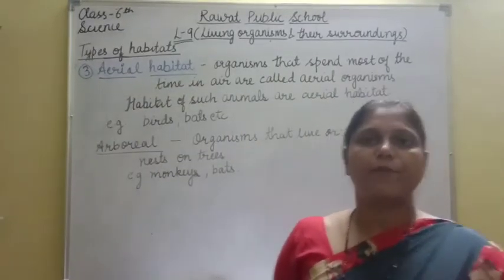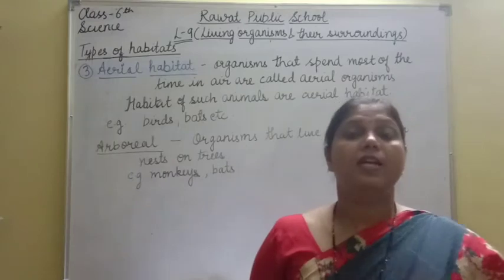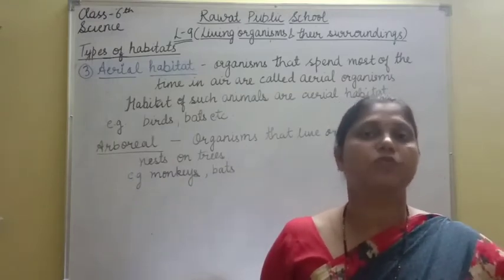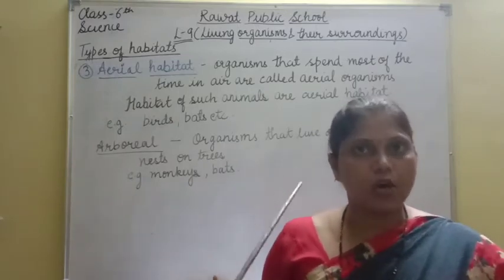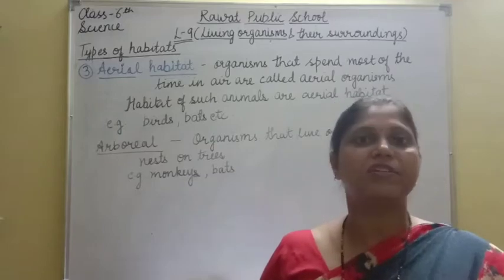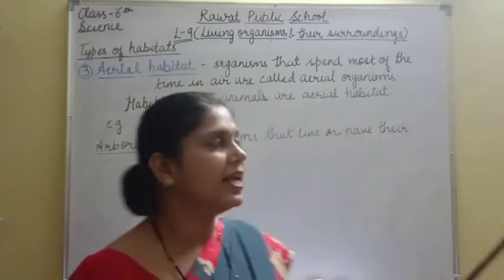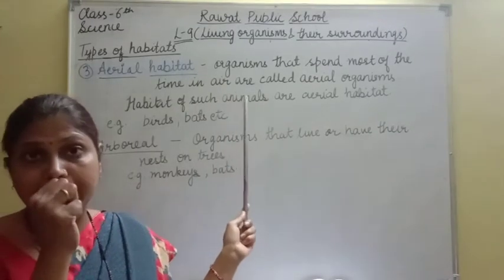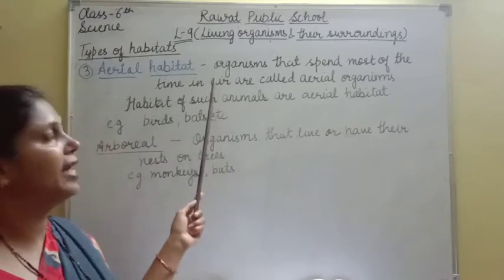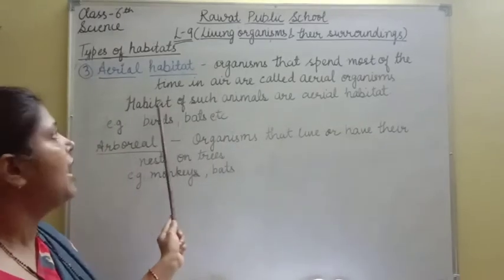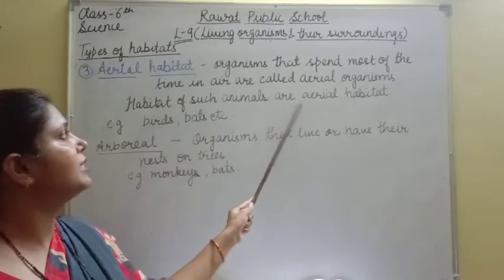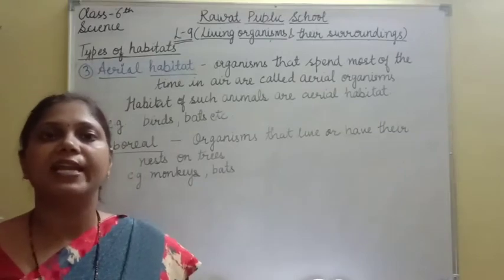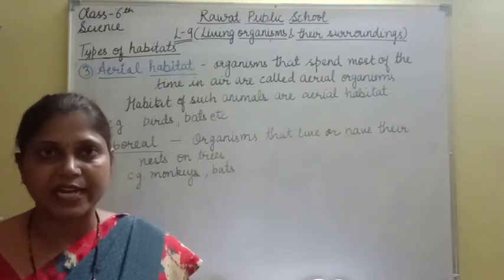Last type of habitat is aerial habitat. Organisms that fly in the air — जो उड़ते हैं, वो aerial organisms कहलाते हैं, and the habitat in which they live is called aerial habitat. Organisms that spend most of their time in air are called aerial organisms. Examples: birds, bats — यह सब aerial habitat में आते हैं.